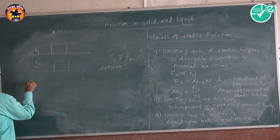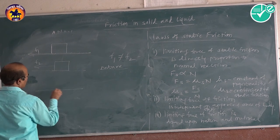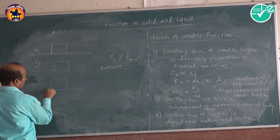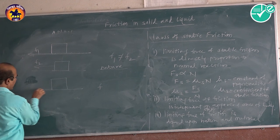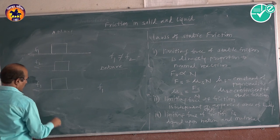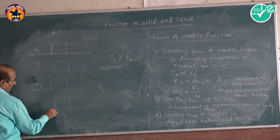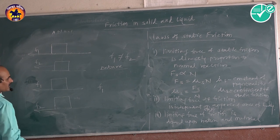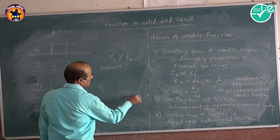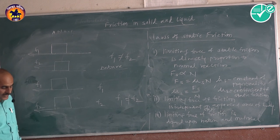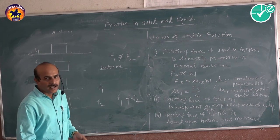The third point is that the limiting force of friction also depends upon the material. If you keep a block of one material on a tabletop and note the force of static friction as F1, then take another block of a different material and note the force of static friction as F2, we find that F1 is not equal to F2. Thus, the limiting force of friction depends upon the nature and the material of the substances.